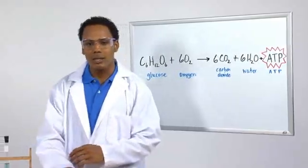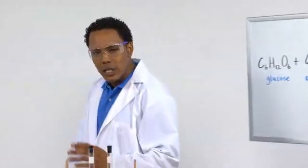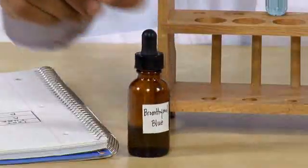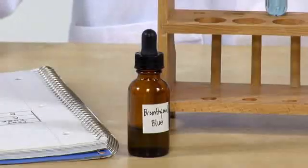Carbon dioxide is colorless, odorless, and really hard to detect in the lab. So we're going to use bromothymol blue as a carbon dioxide indicator. Bromothymol blue is a chemical that changes color when carbon dioxide is present. Be careful with this — it can cause stains on clothing, and if you get it in your eyes, immediately flush them with water.